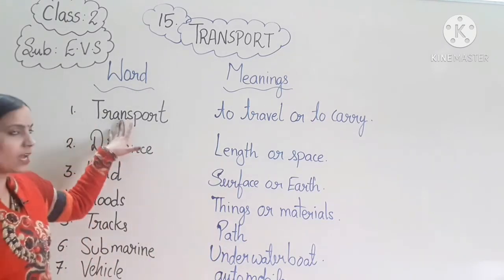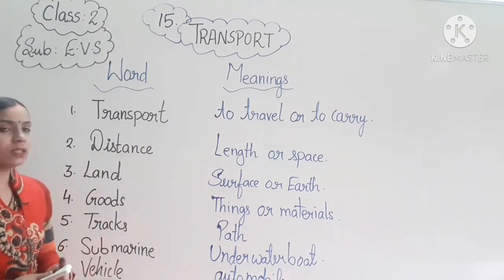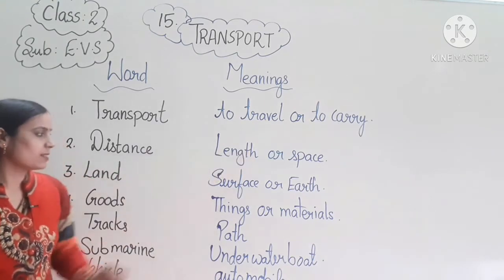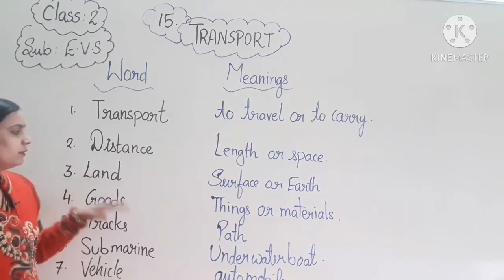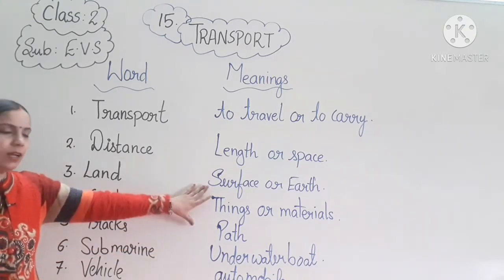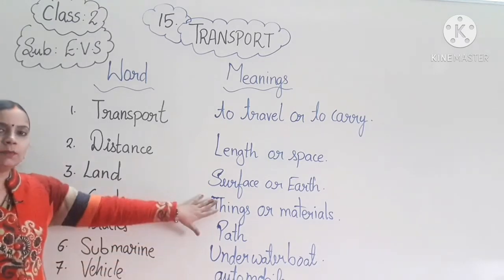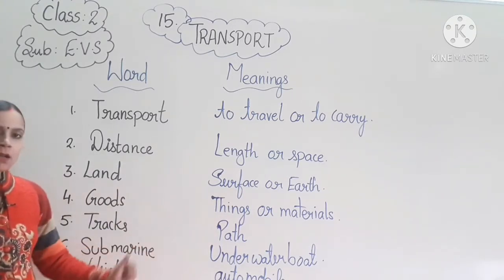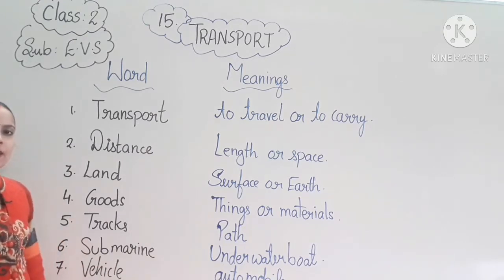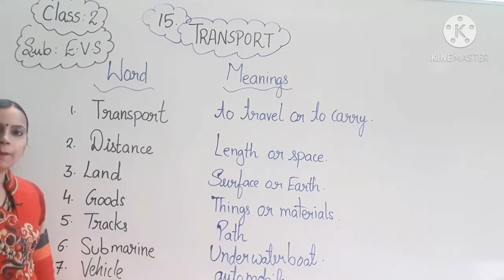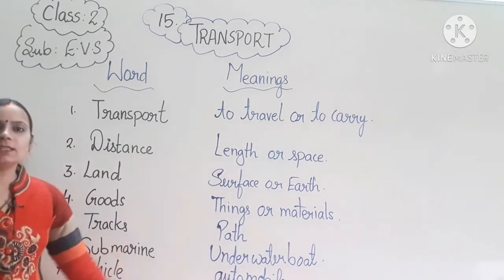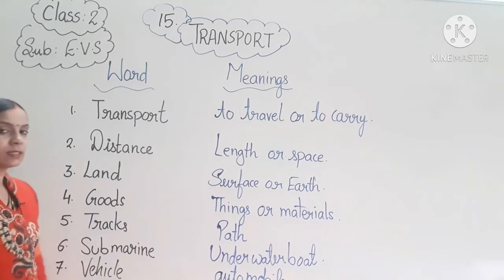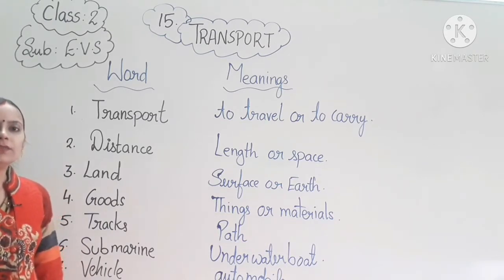To review: transport means to travel or to carry. Distance means land or space. Land means surface or earth. Goods means things or materials. Tracks means path. Submarine means underwater boat. Vehicle means automobile. These word meanings you have to write in your EBS notebook.